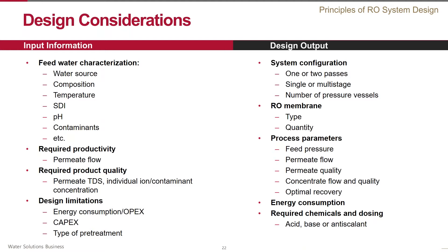The next important parameters are the required design productivity and product quality. Finally, there are certain boundaries or limitations that the new system is subject to. This can be energy consumption, the size of the system, the feed temperature, sometimes the type of pretreatment, etc.